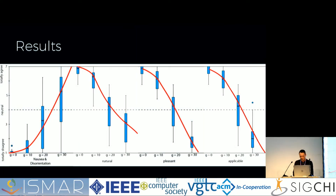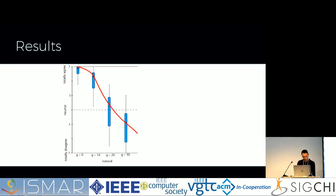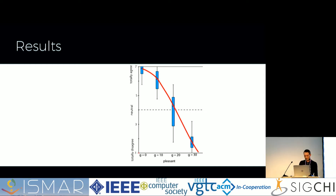Now to the results. The red lines drawn here show hand-fitted trend curves to illustrate the trends. First, for nausea and disorientation: 10 degrees per meter — twice the detection threshold — did not come with much nausea or disorientation, while 30 degrees per meter was inapplicable for most participants. Similar results were seen for naturalness of navigation: 10 degrees per meter seemed very natural, 20 degrees per meter seemed around borderline, and 30 degrees per meter was unnatural for most. The pleasantness scores were much the same — 10 degrees good, 20 degrees borderline, and 30 degrees not applicable.